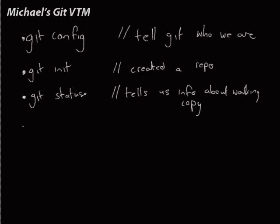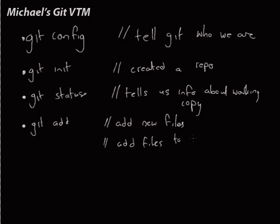We used git add. Remember that git add had two purposes: the first was to add new files to the repo, and the second was to add files to the staging area. Remember that unlike Subversion and CVS, git has this notion of a staging area where we have to add files before we can commit them. This is actually a really powerful thing, and we'll probably see it later.